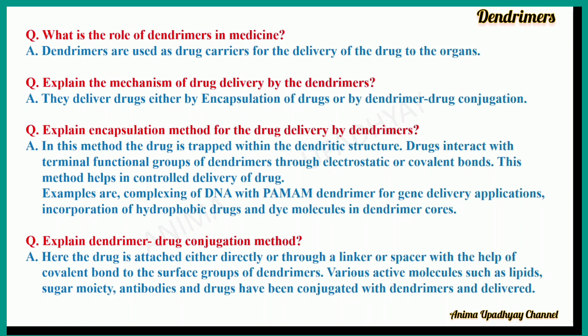Explain the dendrimer-drug conjugation method. Here the drug is attached either directly or through a linker or spacer, with the help of a covalent bond, to the surface groups of the dendrimers. The surface groups are the outermost shell after the third generation. Various active molecules such as lipids, sugar moieties, antibodies, and drugs have been conjugated with dendrimers and delivered.